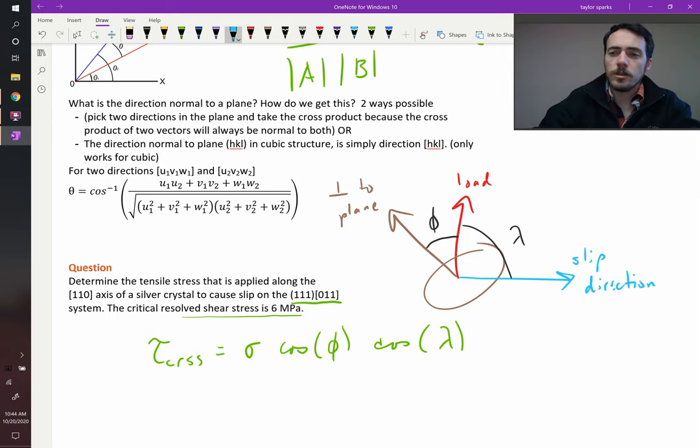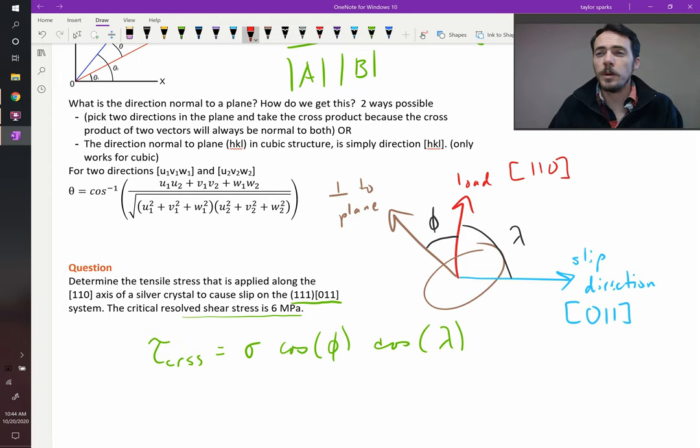Now, what were those? The slip direction we know is a [0-1-1] direction. The loading direction we're told is a [1-1-0] direction. And the plane is a (1-1-1) plane. In a cubic system, and this is important, only in cubic systems the direction normal to that plane is the same as the plane. So we're going to use square brackets because it is now a direction. If the plane was round brackets, (1-1-1), then the direction normal to it is also [1-1-1]. That only works for the cubic system. In other systems, you have to do some nasty vector algebra, but it's not too bad.